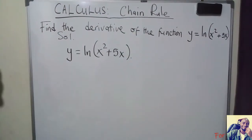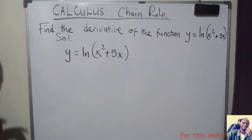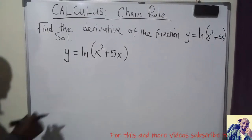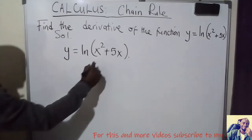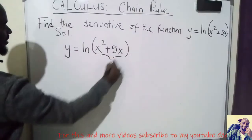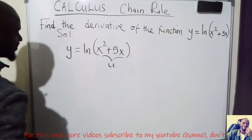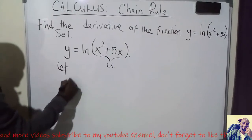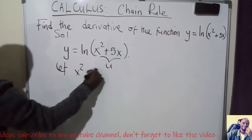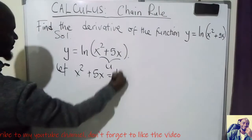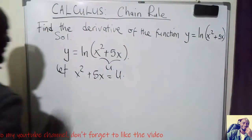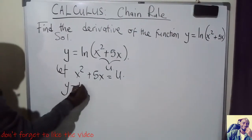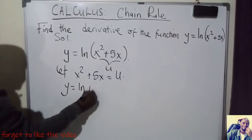It's pretty simple to do, but there is one tactic that you need to apply. The first thing you need to do is to put the inner function as u. Let x² + 5x be u. So now my function becomes y = ln(u).